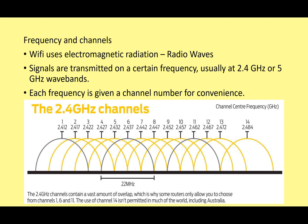Another reason we use channels is that they don't operate at exactly one frequency — they operate over a range. If you look at channel 6, it operates across a 22 megahertz band, and all the other channels do the same. At 2.4 gigahertz we have channels 1 through 14, though we typically don't use channel 14 as it can interfere with other services further up the spectrum.